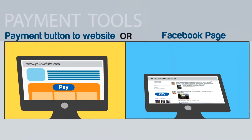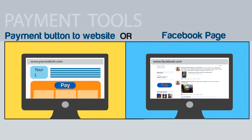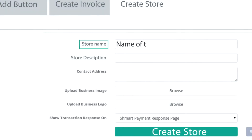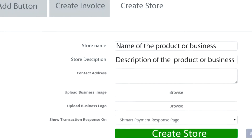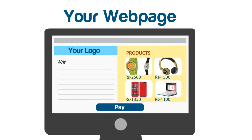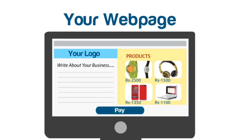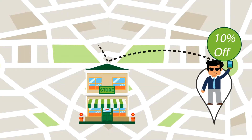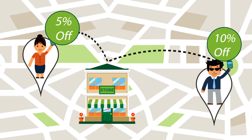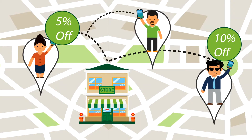Add a payment button to your website or Facebook page. Make your own web page — list your products with a rate card and write about your business. You can target other SMART customers nearby to promote your business.